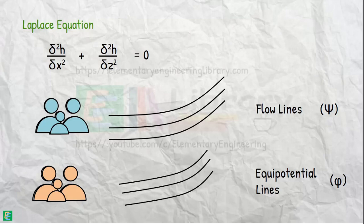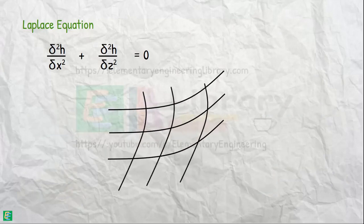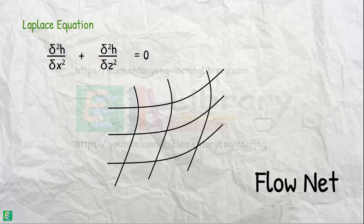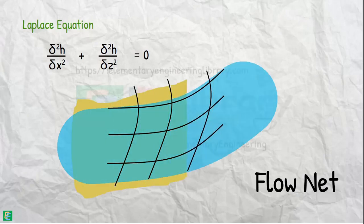Once we get these lines, we may be able to obtain a graphical solution to the Laplace equation, and that is called flow net. Using that flow net, we may calculate our desired quantities like seepage through soil.